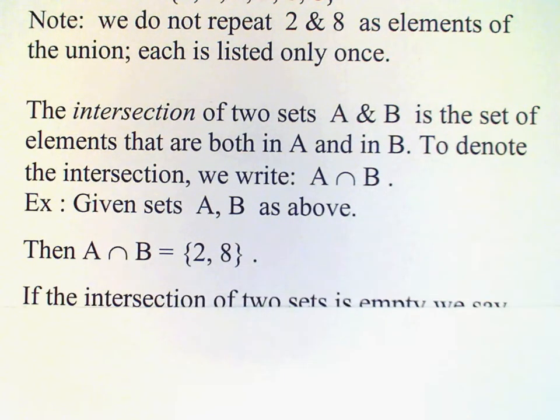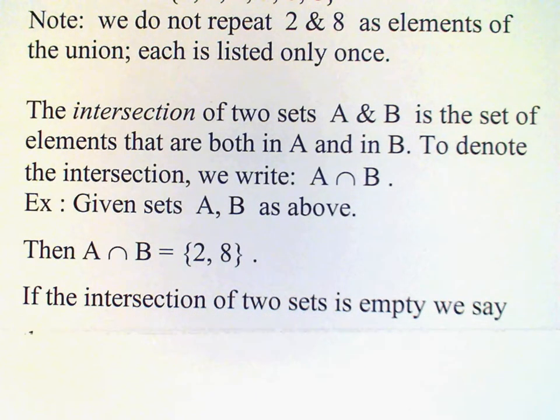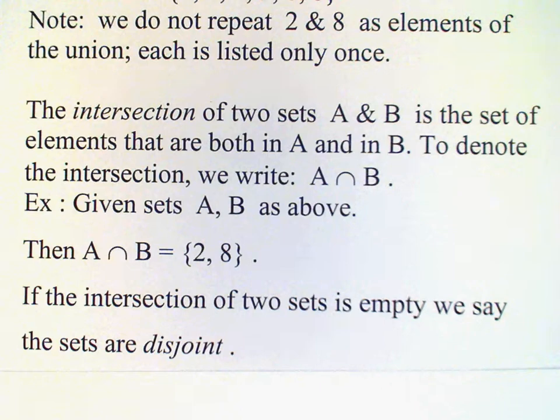Okay, now it is possible when we look at two sets that they have no element in common. And if that is the case, if their intersection is empty, then we will say that the sets are disjoint.